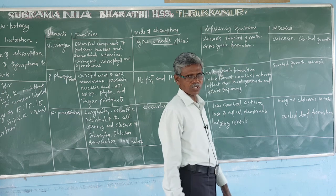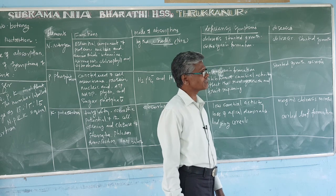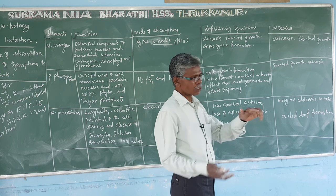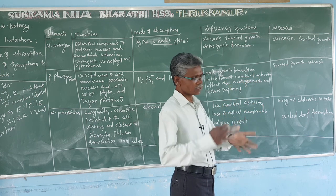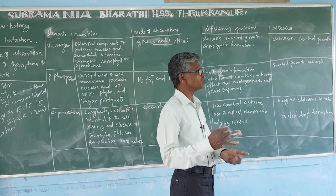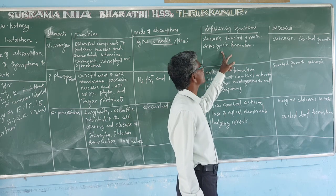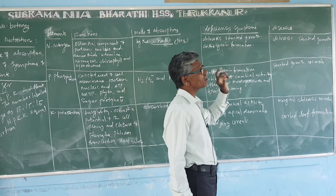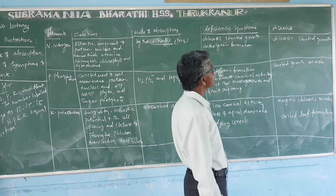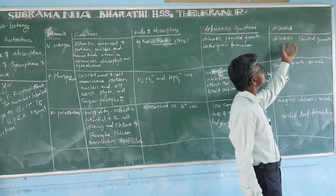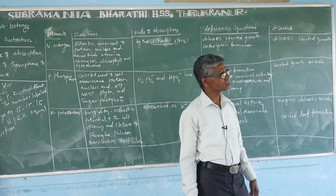Next, mode of absorption. Nitrogen is absorbed as nitrate ions. Deficiency symptoms include chlorosis and stunted growth. Chlorophyll is damaged, which in turn inhibits photosynthesis.